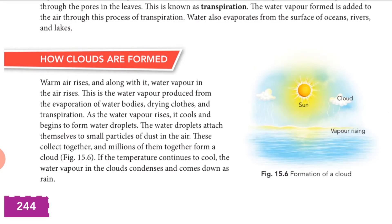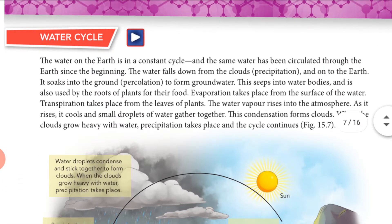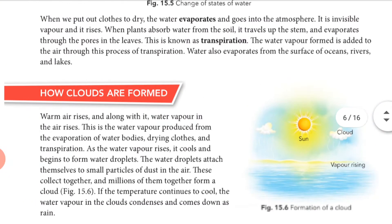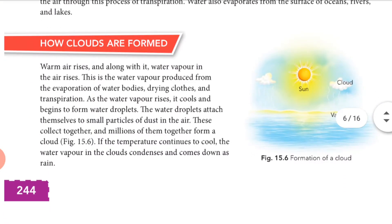Today we will discuss cloud formation and the water cycle. In the previous chapter we discussed the air cycle — how oxygen is useful and how it is recycled in our ecosystem. Today we continue with these related topics.